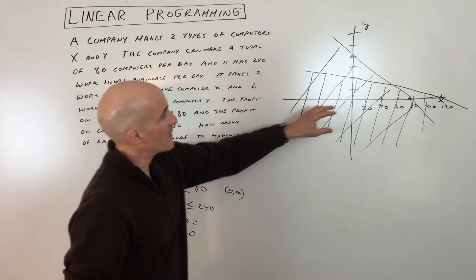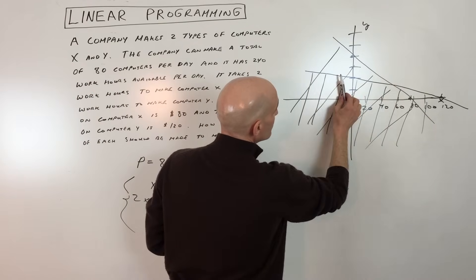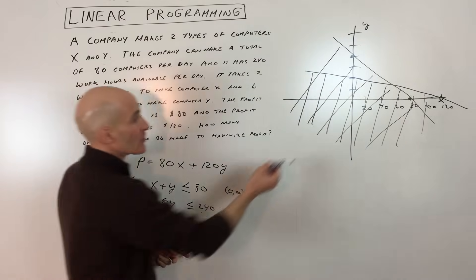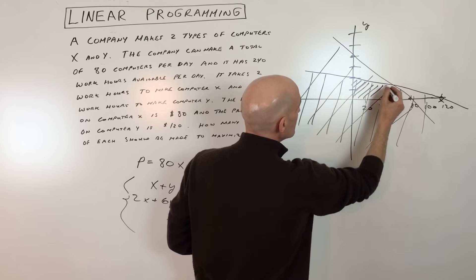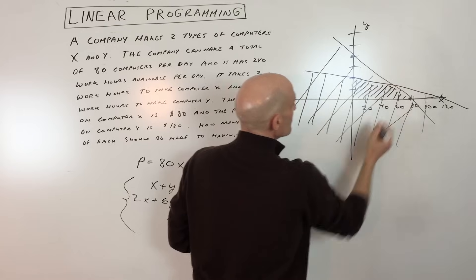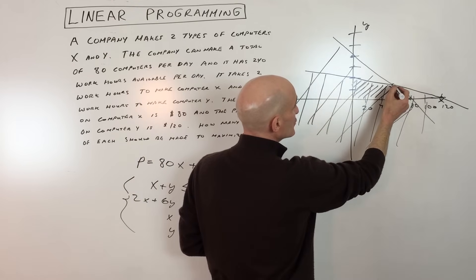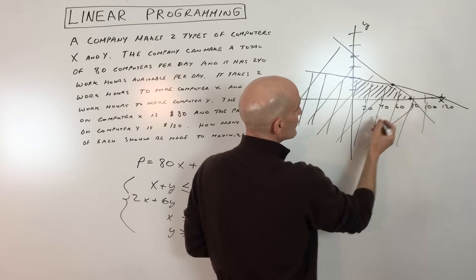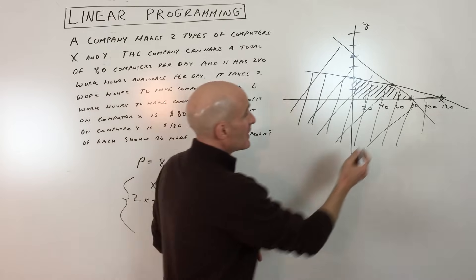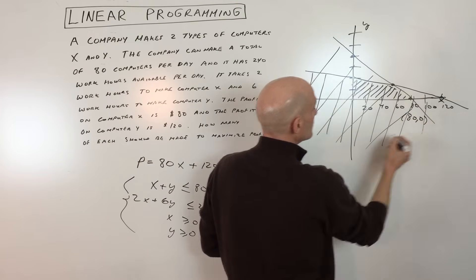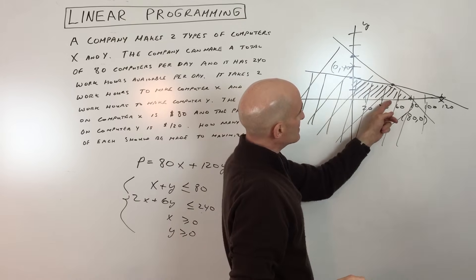We can see the overlapping region of all constraints in the first quadrant, since X and Y must both be greater than or equal to zero. Now we want to find the vertices or corners of this feasible polygon. Some are easy to read: (80, 0), (0, 40), and the origin. But the intersection point of the two constraint lines is not immediately obvious — it might be (60, 20), but we need to solve the system to confirm.